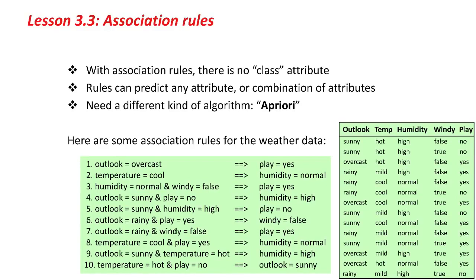We don't have to predict play, or indeed any particular attribute. Looking at rule number 4 — the outlook is sunny and play is no — the first two instances satisfy that rule, and there are no other instances that satisfy it. It's 100% correct, but it only covers two instances.